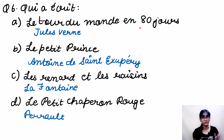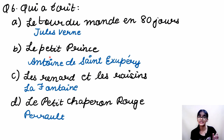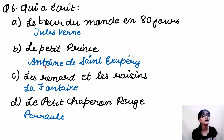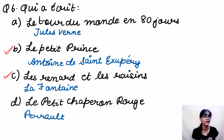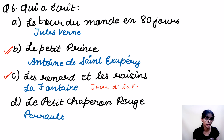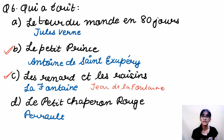The sixth question covers a few important books and their authors. These two are the most important ones, and many students get confused about which author wrote which book. Don't get confused between La Fontaine and Antoine de Saint-Exupéry. You can even write the full name Jeanne de la Fontaine — it's the same thing; just Fontaine would also do. So these were a few important authors and their books.